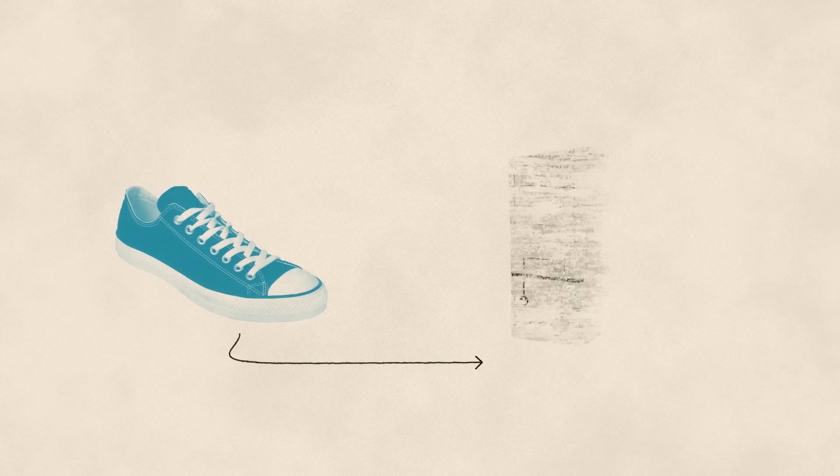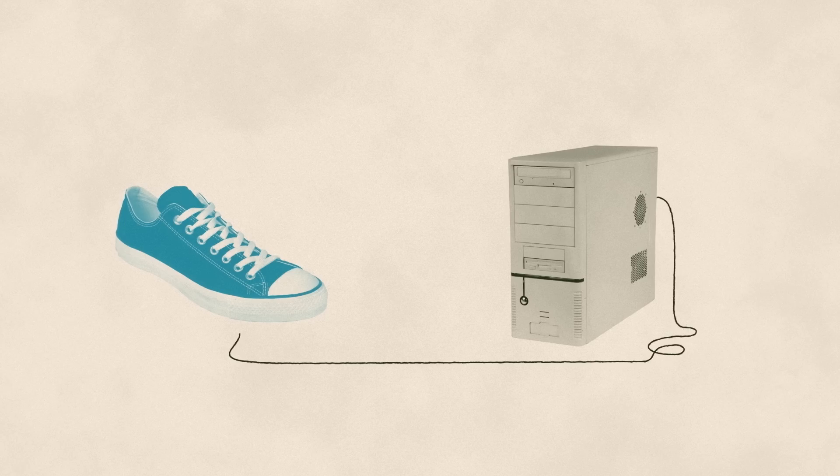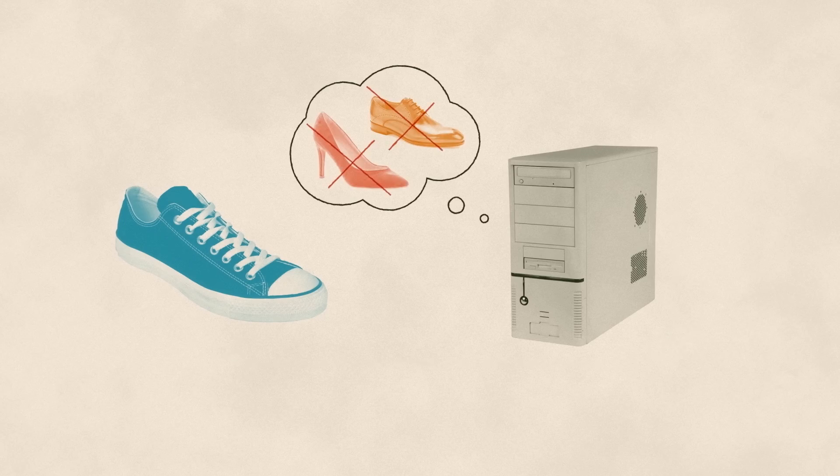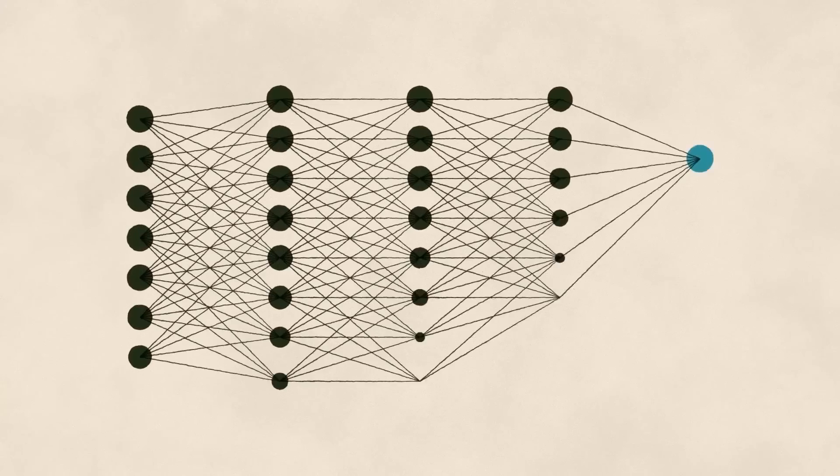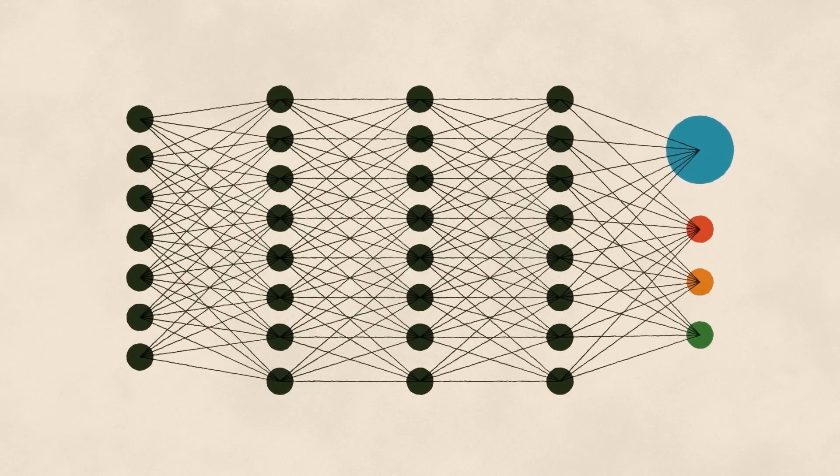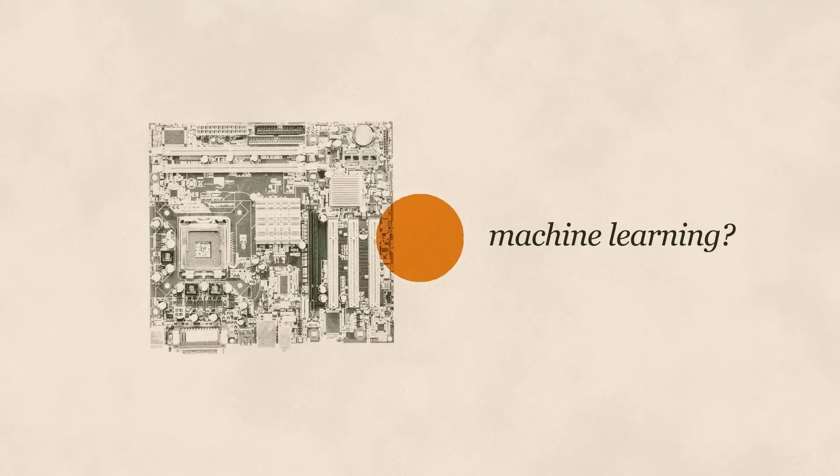Now imagine that you're trying to teach a computer to recognize a shoe. You may end up exposing it to your own bias. That's how bias happens in machine learning. But first, what is machine learning?